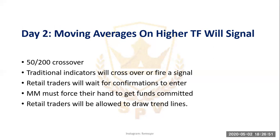On day two, you'll find a 50 and 200 EMA crossover on the hour chart, and this also marks that all other traditional indicators will fire a signal that a new trend has now formed. So retail traders will now wait for confirmation to enter. Even those using moving averages — in the retail traders' world, a 50 and 200 crossover will indicate that this is a new trend.